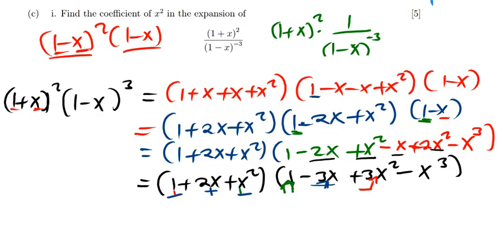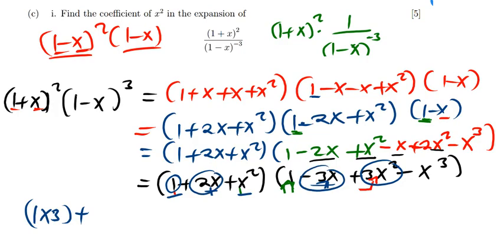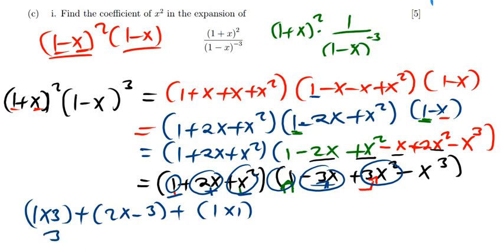The shortcut is: since we're interested in the coefficient, we just say 1 times 3 for the first x squared contribution. Then 2 times negative 3 for the next. Then 1 times 1 for the last. So here I get 3, plus negative 6, plus 1, which still gives negative 2. That's my coefficient. So that is it for this question.